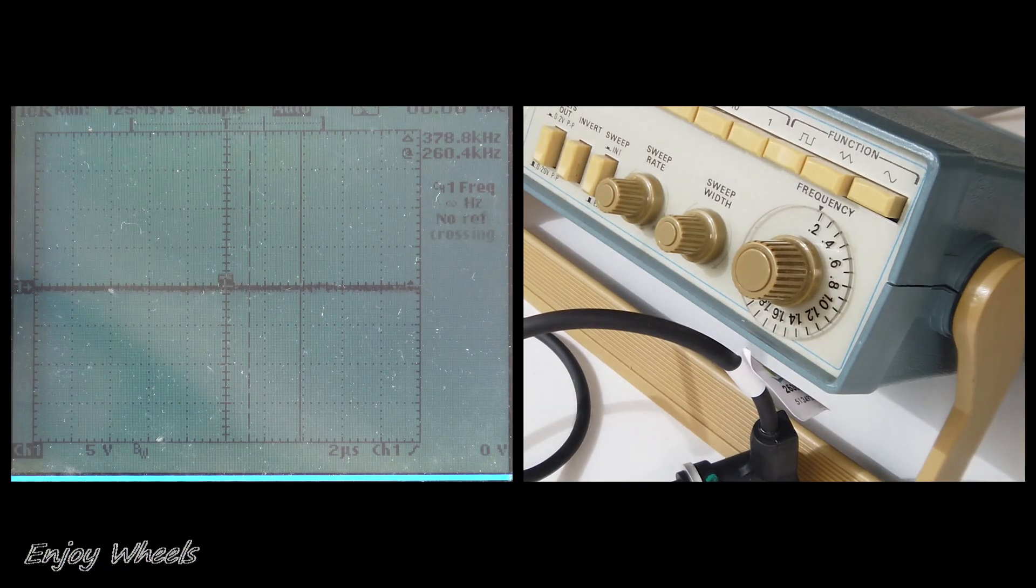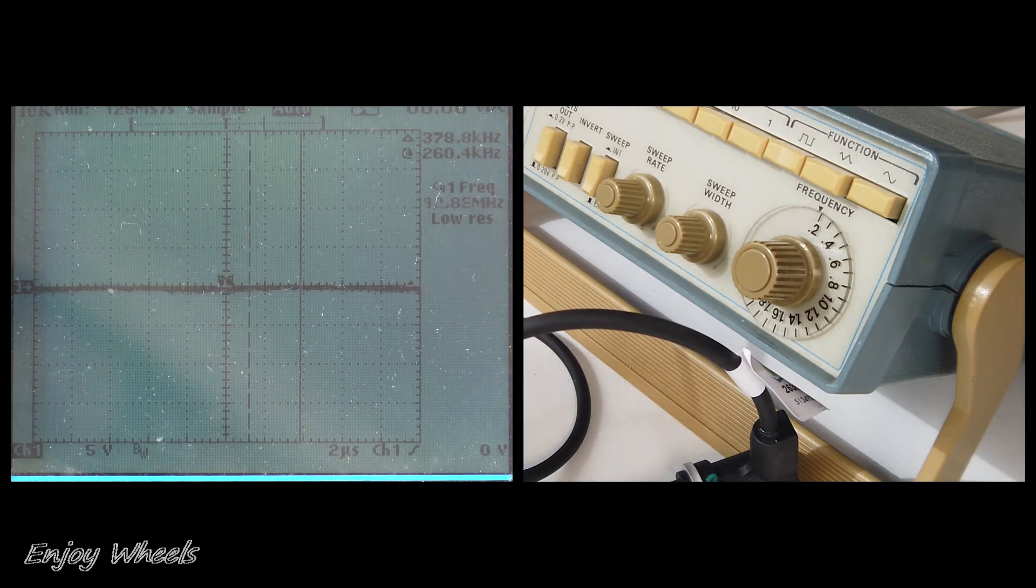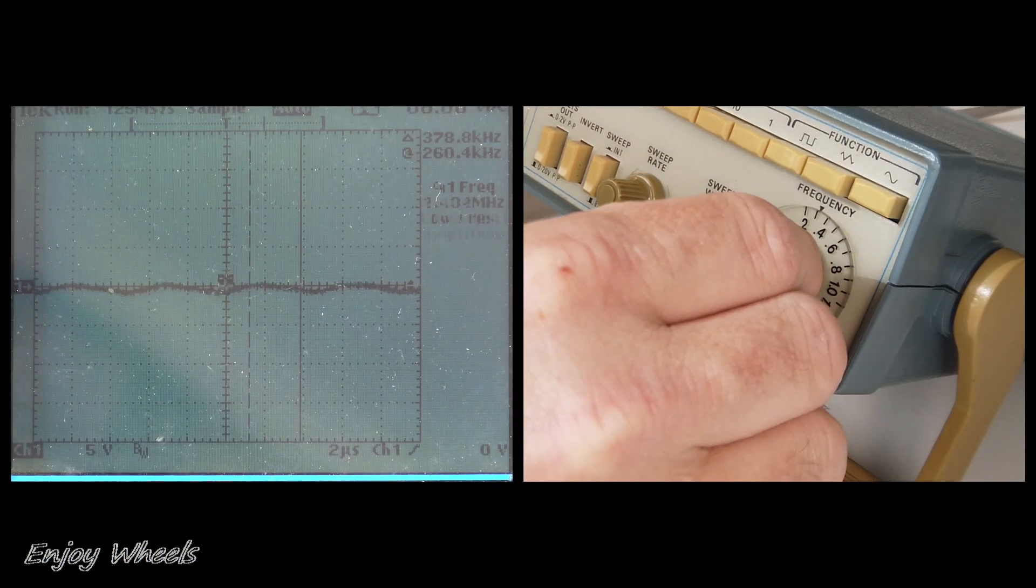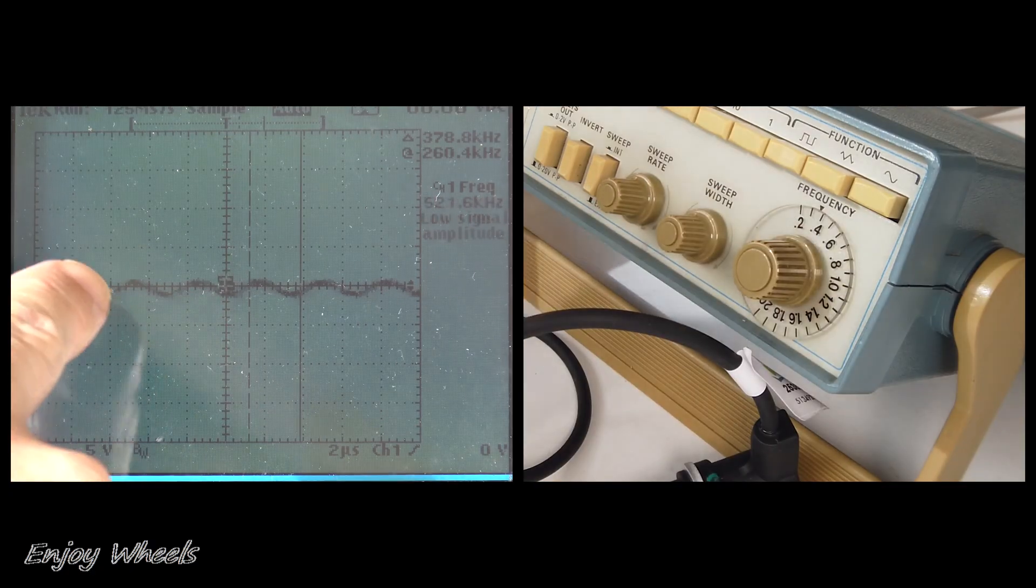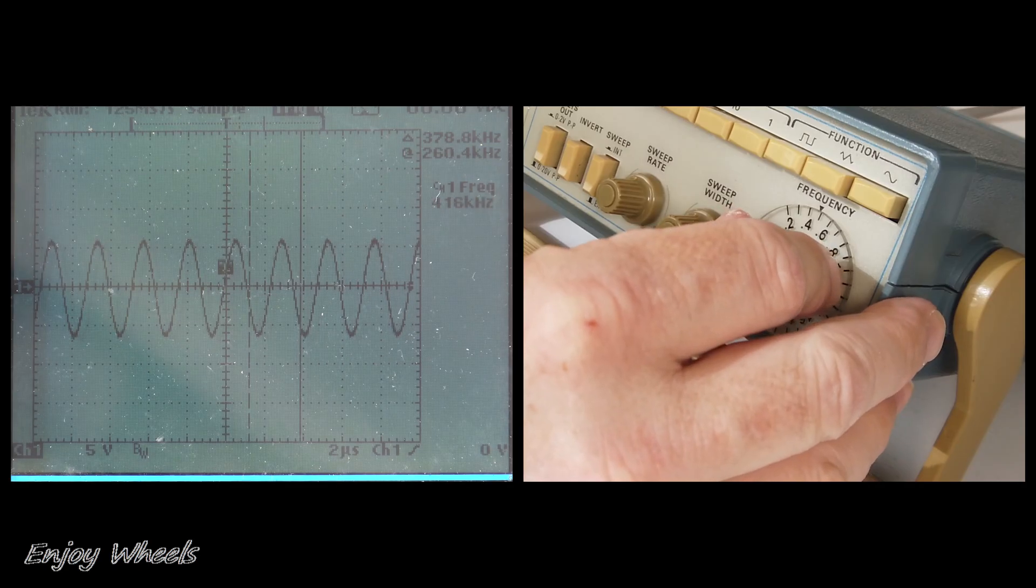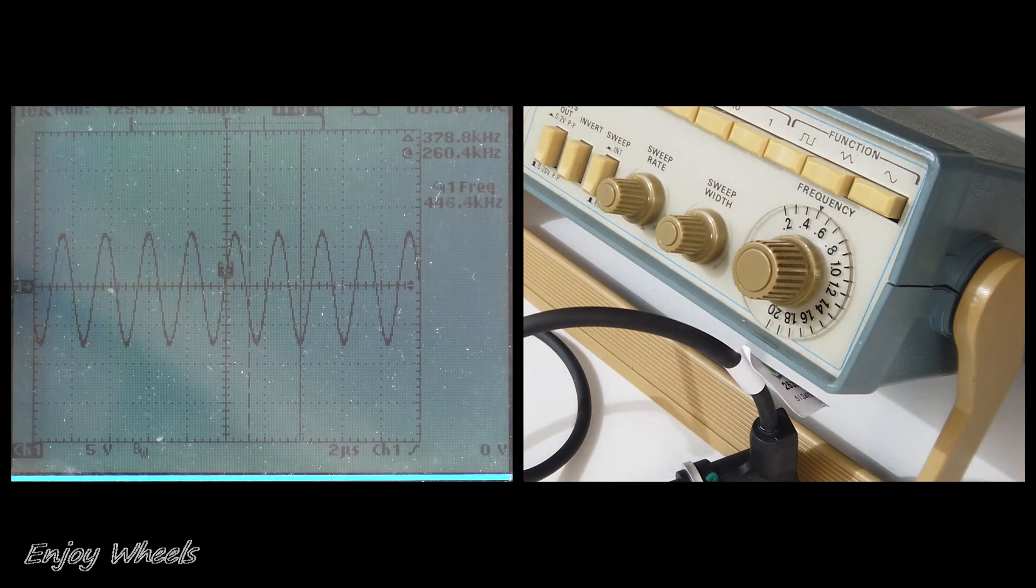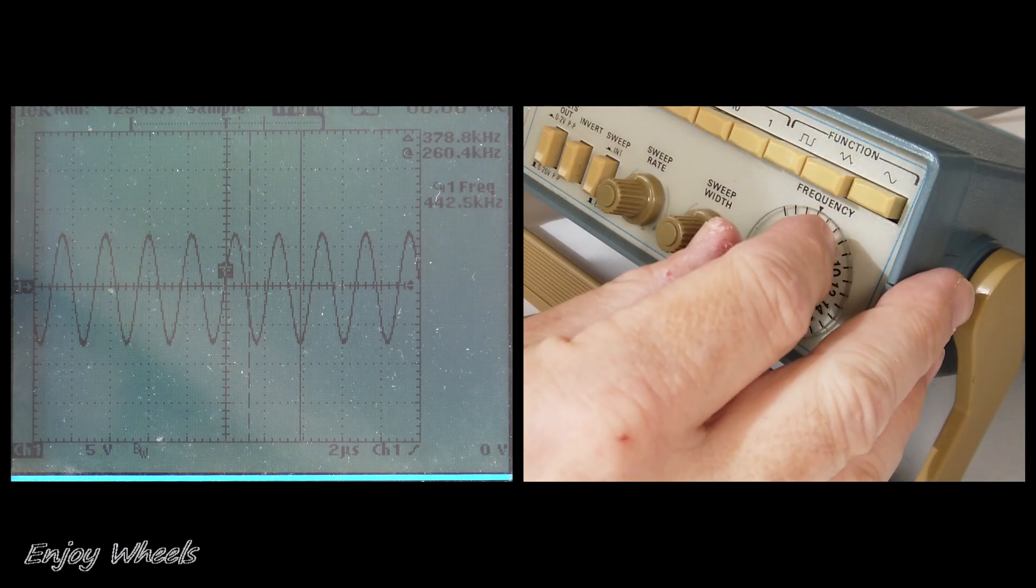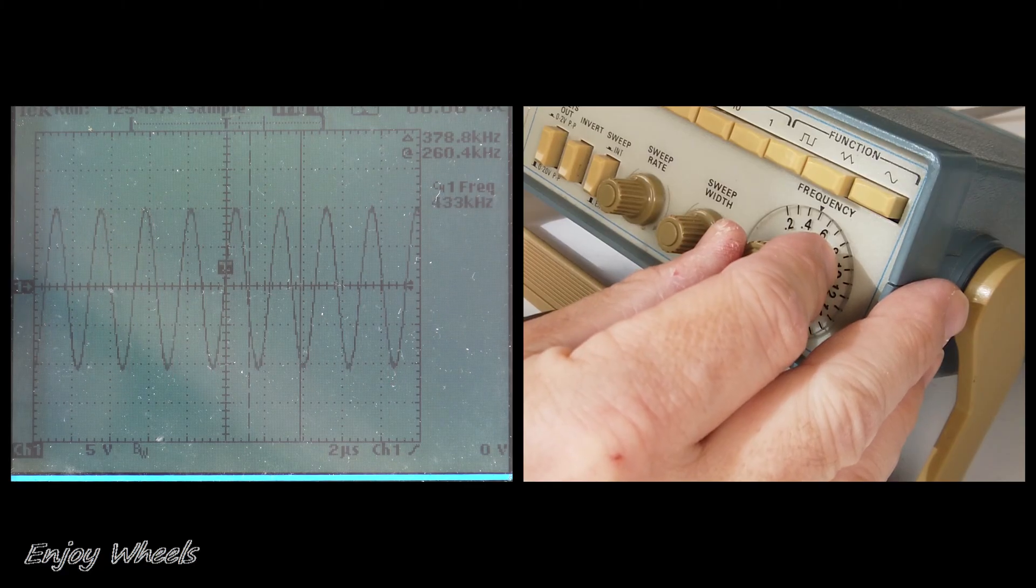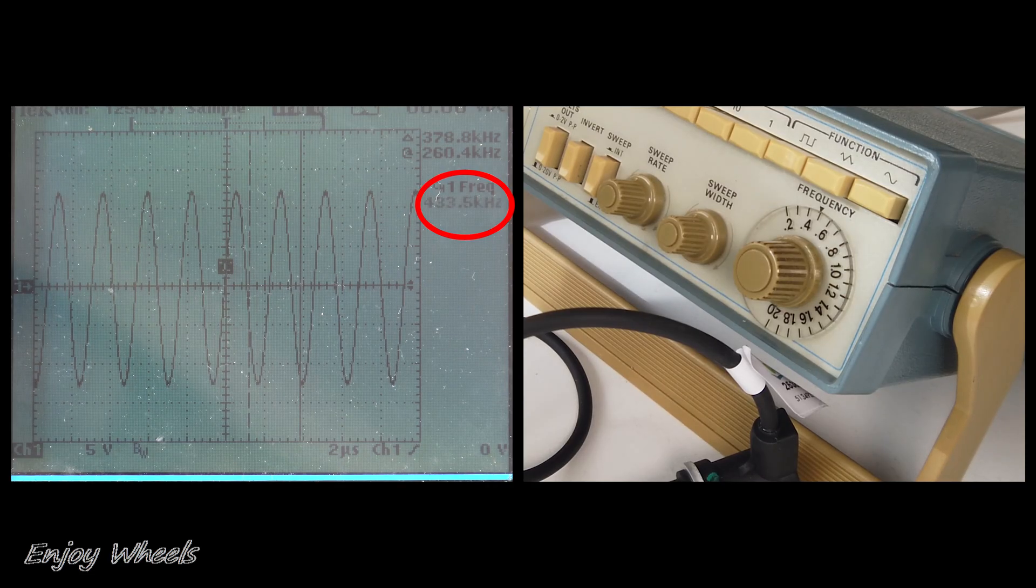Now, I will search for the resonance frequency of the transformer, which is the frequency at which it transmits the most signal. For that, I vary the frequency on the generator, and I look for the one that brings the maximum amplitude to the secondary. There the amplitude increases, increases, and it passes through a maximum, to then decrease as I continue to increase the frequency. I go back, and I seek the maximum. And I find roughly 433 kHz.